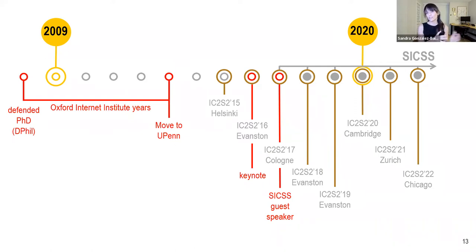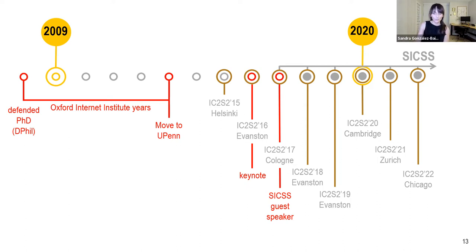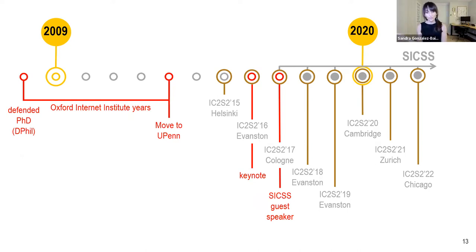Back when I started my PhD, social media didn't exist, and the web was considered a technological fad that would soon perish and was totally inconsequential for how sociologists think about the world. Of course, they were all wrong. By the time I was ready to defend my dissertation, the Oxford Internet Institute was growing under the direction of Bill Dutton and Helen Margetts. I was lucky they offered me a job and supported the research I was doing — research that was rather unconventional for a social scientist at the time.